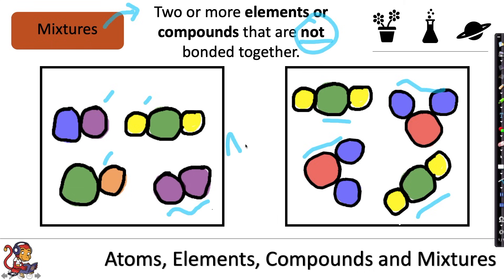Air is a good example of a mixture, because it contains things such as nitrogen, oxygen, water vapor, methane, all of these different elements and compounds, but they are not bonded together.